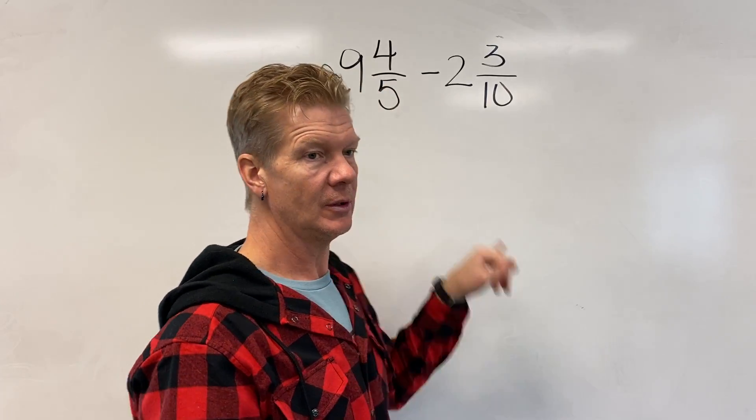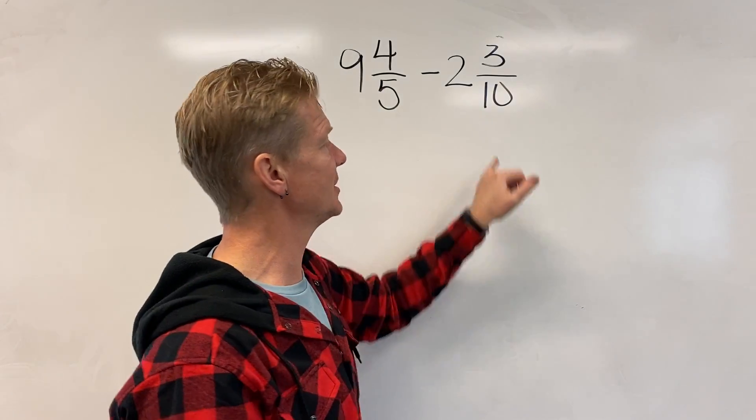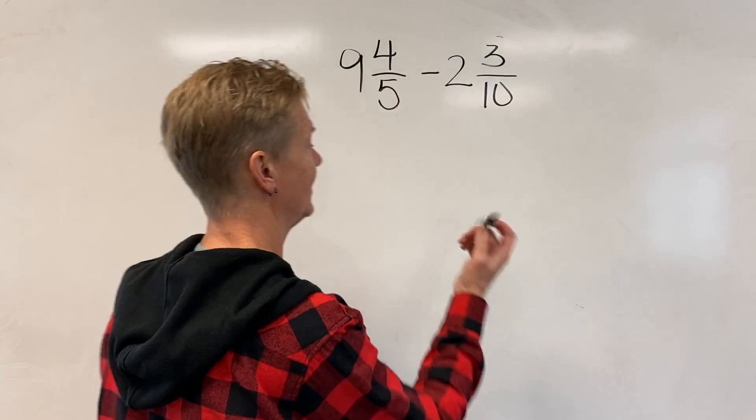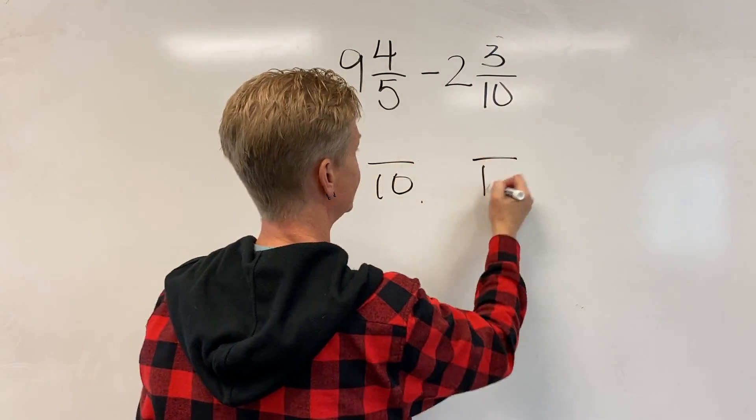A quick rule or shortcut is to ask yourself, does the small number go into the big number? 5 goes into 10, so both will go into 10. That's my common denominator here. So 10 and 10.